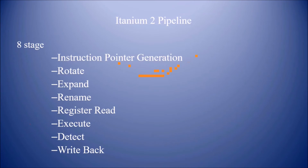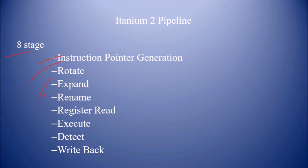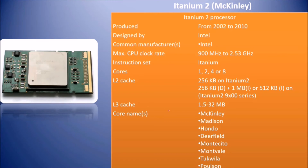Itanium 2's eight-stage pipeline consists of: instruction pointer generation, rotate, expand and rename, register read, execute, detect, and write back. Itanium 2, also popularly known as McKinley, was produced from 2002 to 2010.